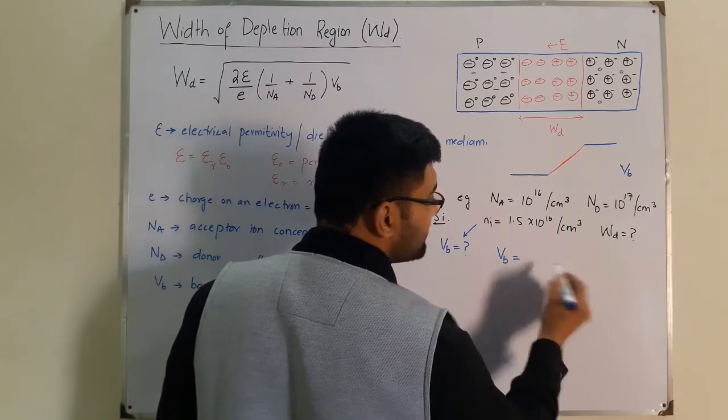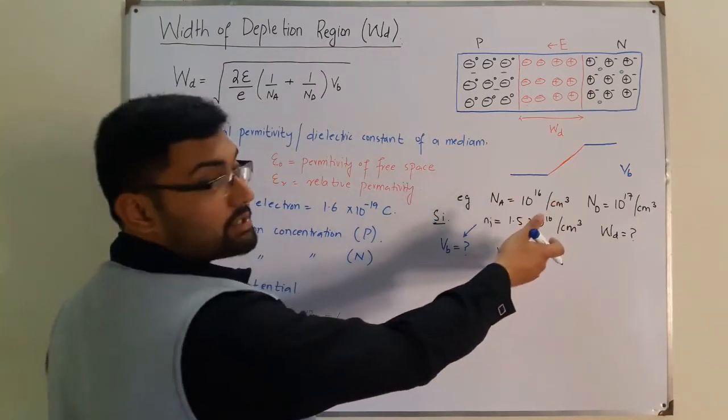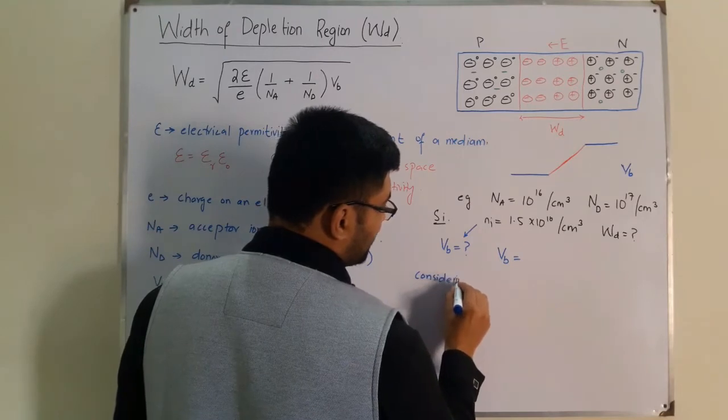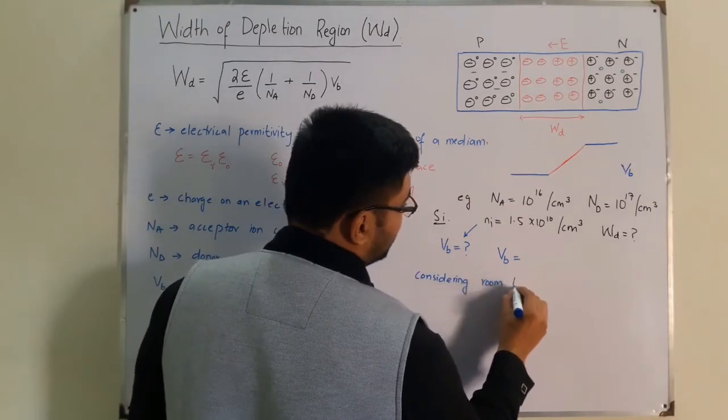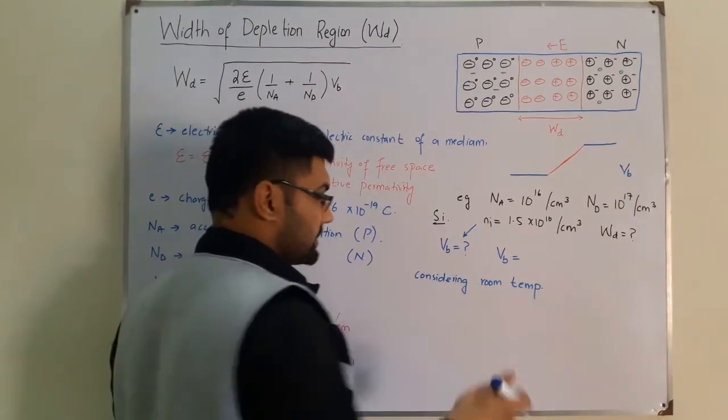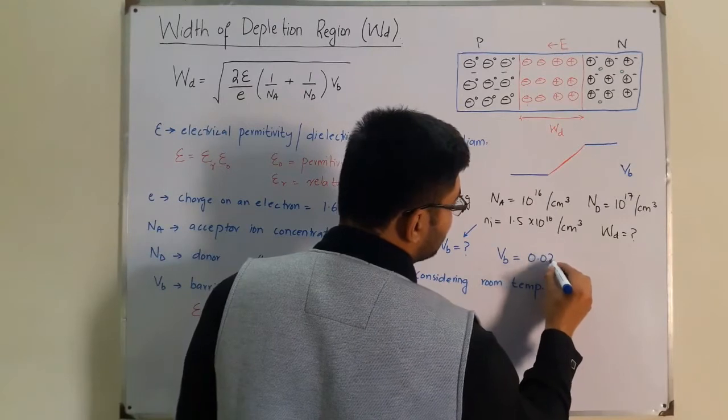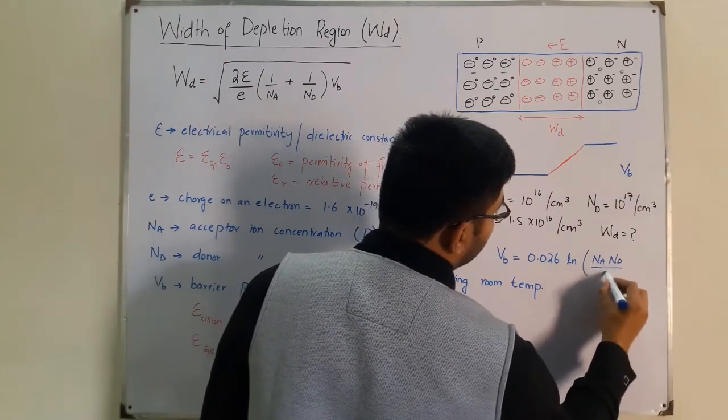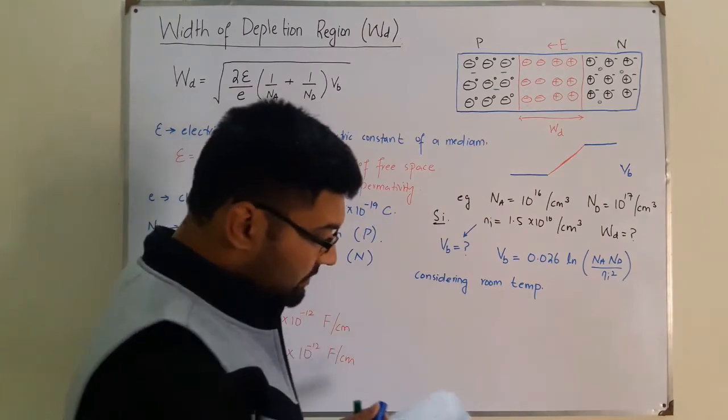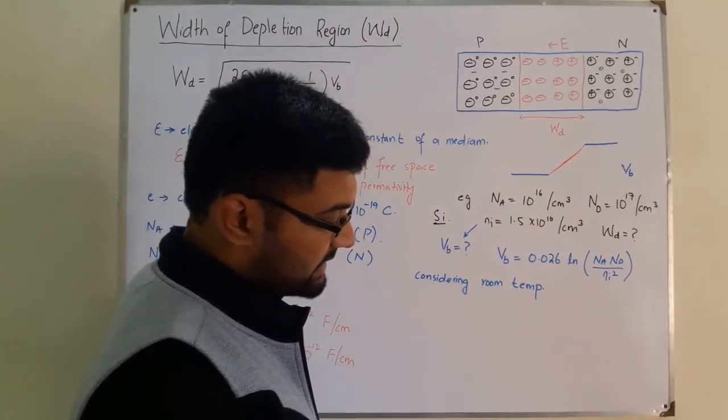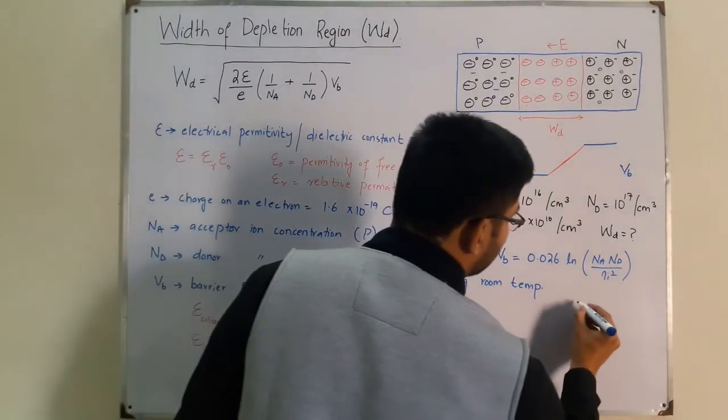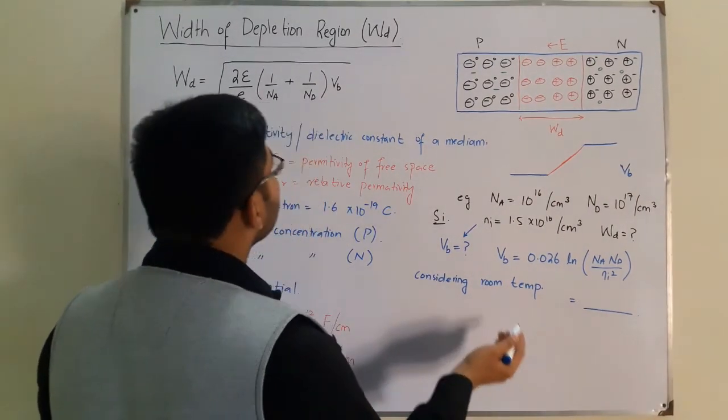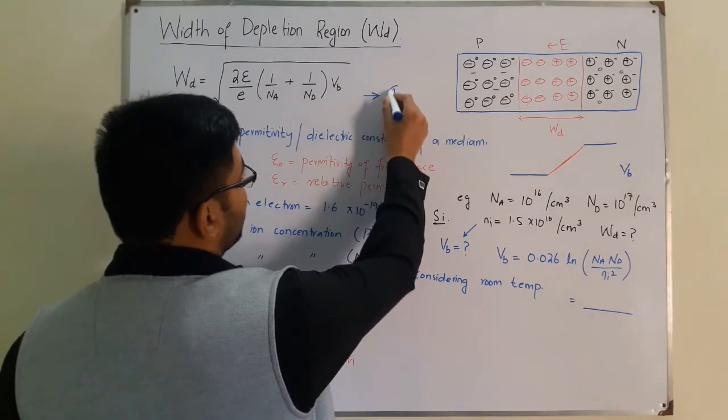The temperature is not given, so consider room temperature. If you're not given a temperature in the question, consider room temperature. At room temperature, we had 0.026 into ln of (NA times ND over NI squared). You put the values over here. I have not calculated it myself, but you find VB from here using the scientific calculator, then put the value of VB in this equation. Let me name it equation A. Put values yourself.